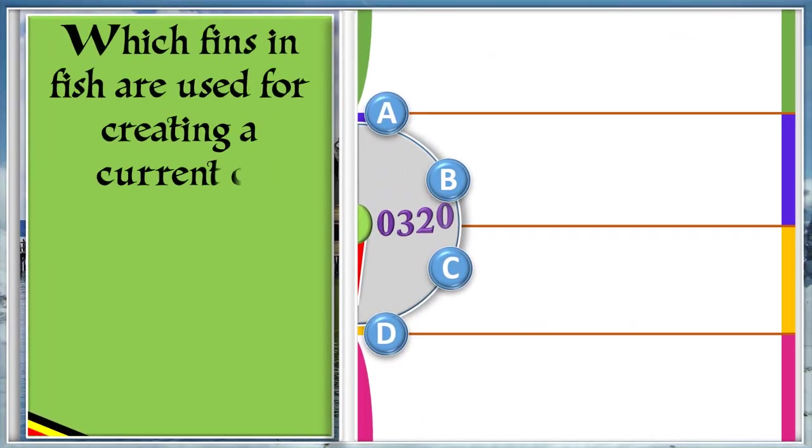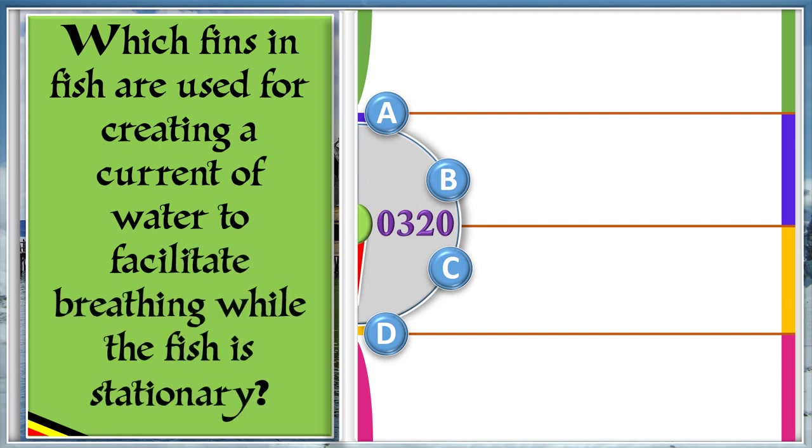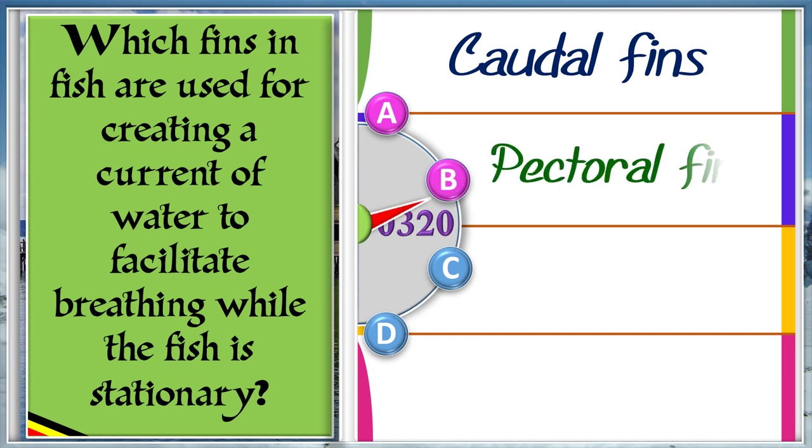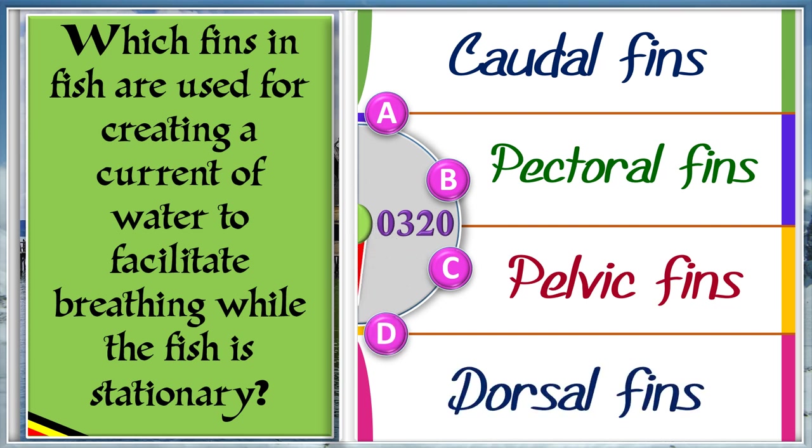Which fins in fish are used for creating a current of water to facilitate breathing while the fish is stationary? A: Caudal fins. B: Pectoral fins. C: Pelvic fin. D: Dorsal fins. And the answer is B, pectoral fins.